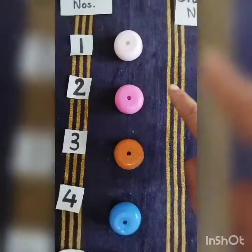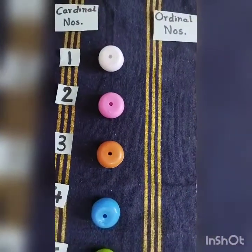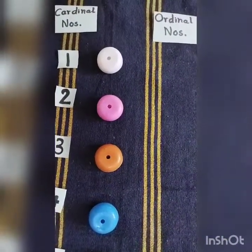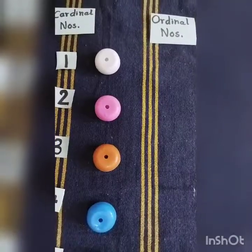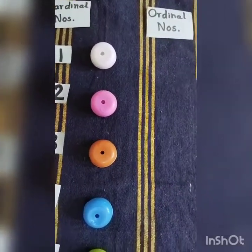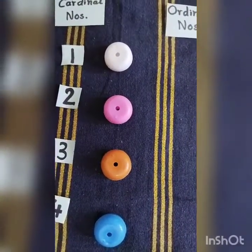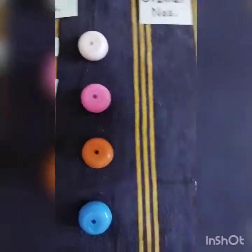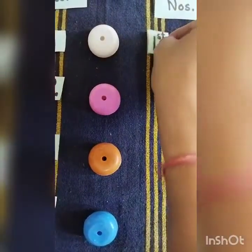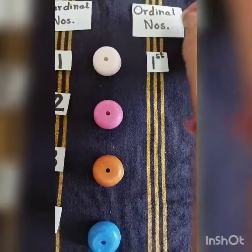Here you can see the white bead. So the white bead is on which position? It is on first. So first is the ordinal number. We will write first against the white bead. So it is first, as you can see here.